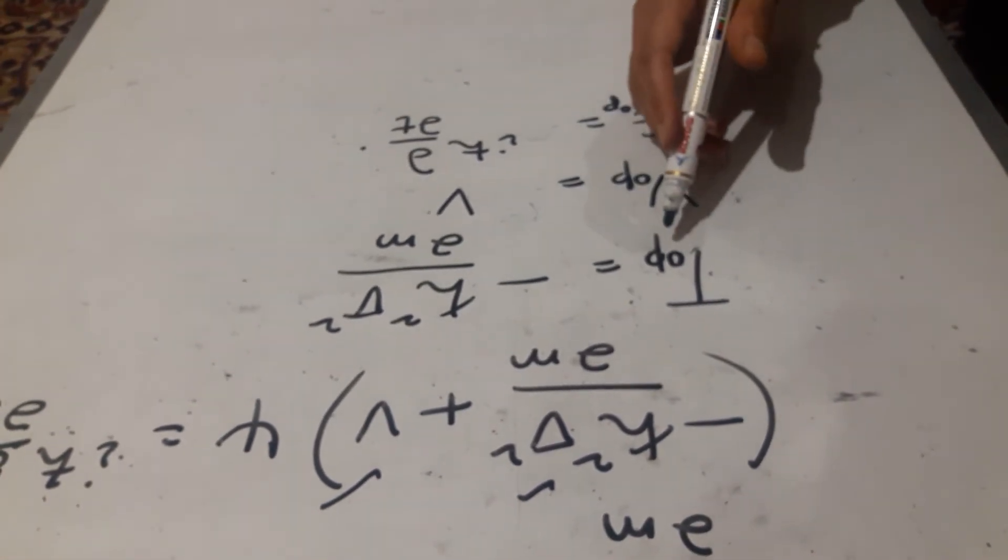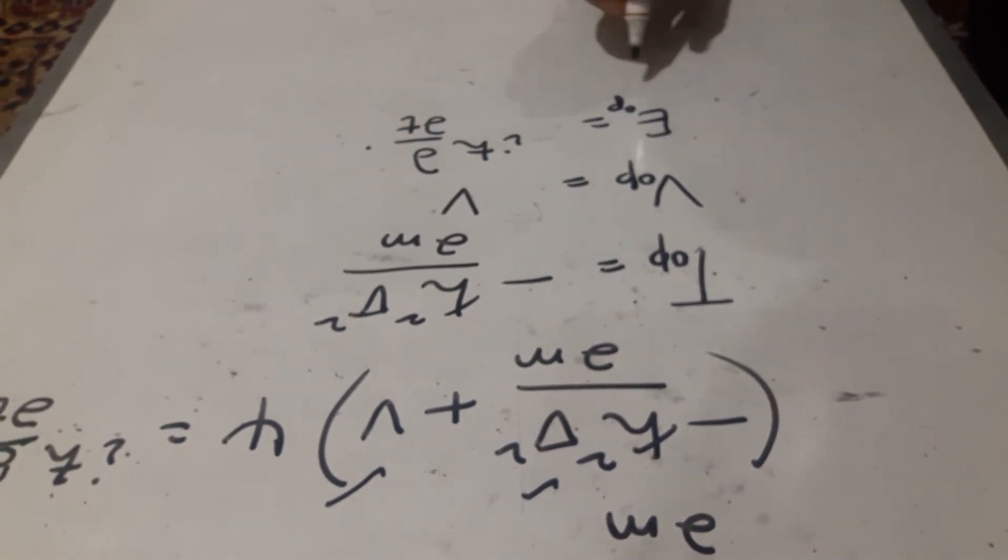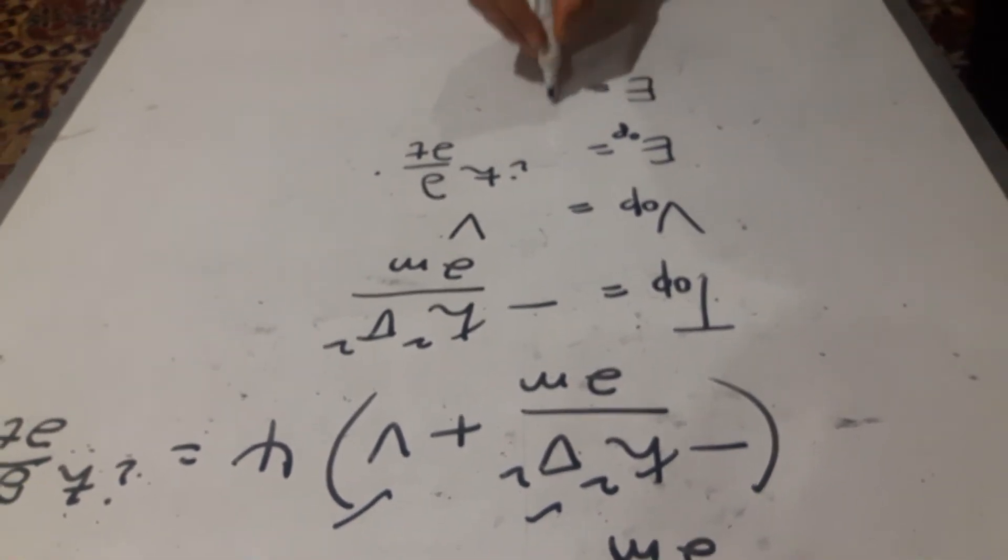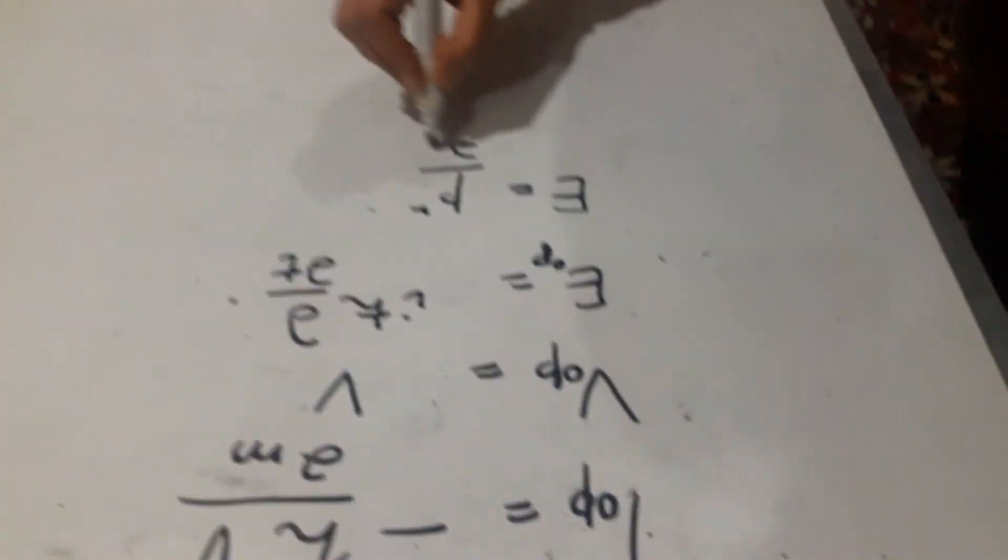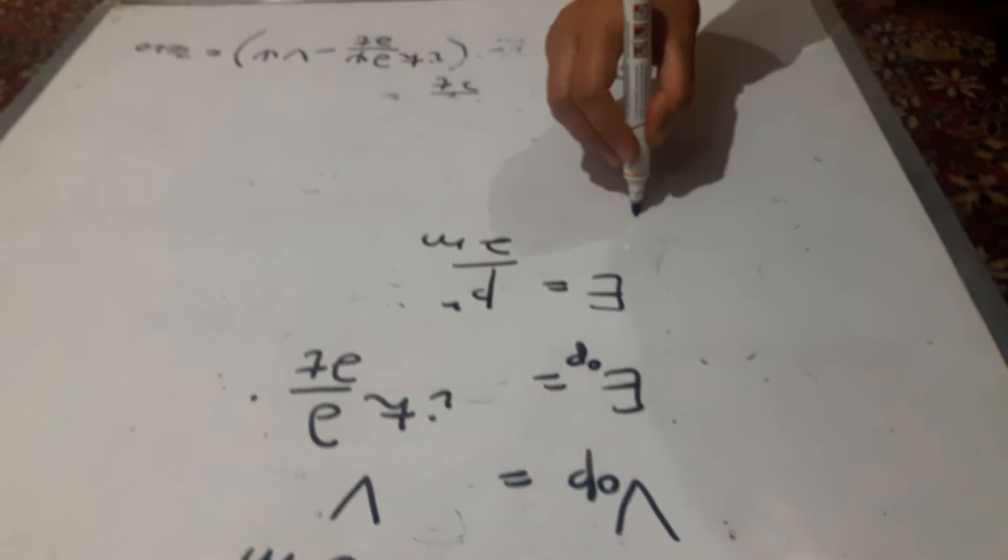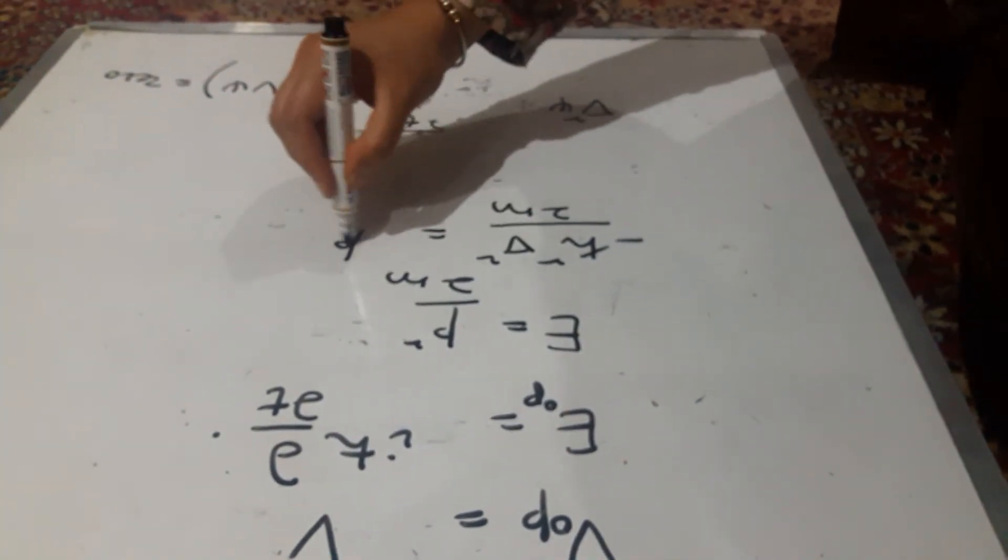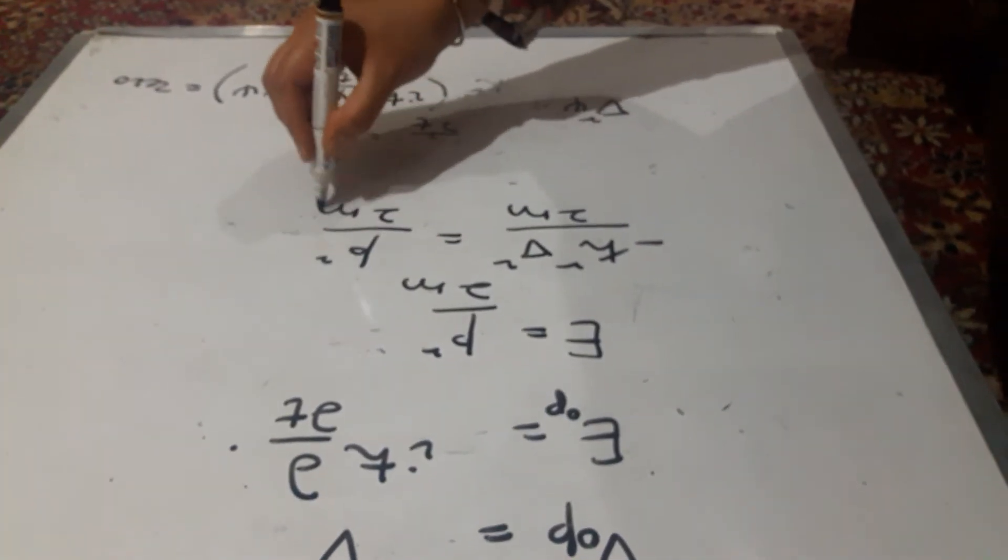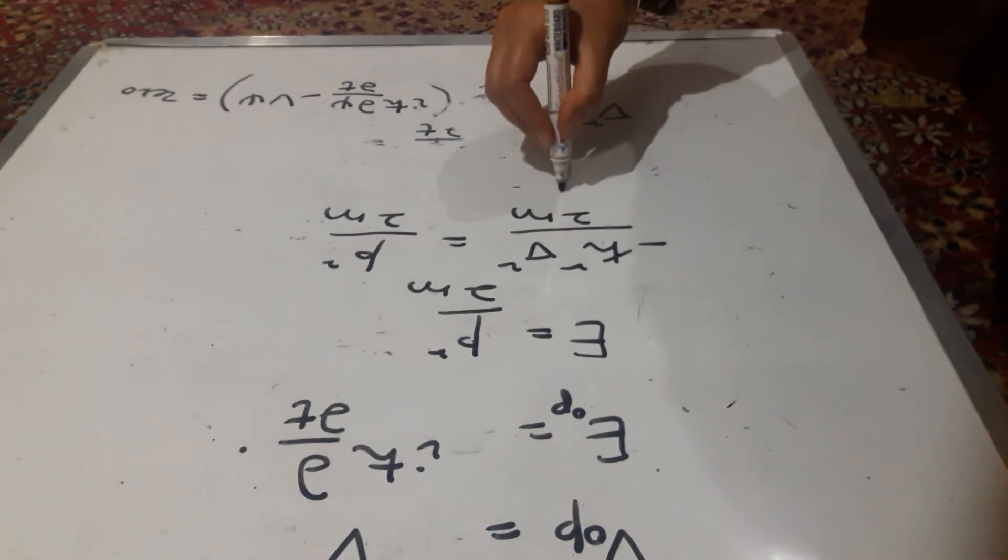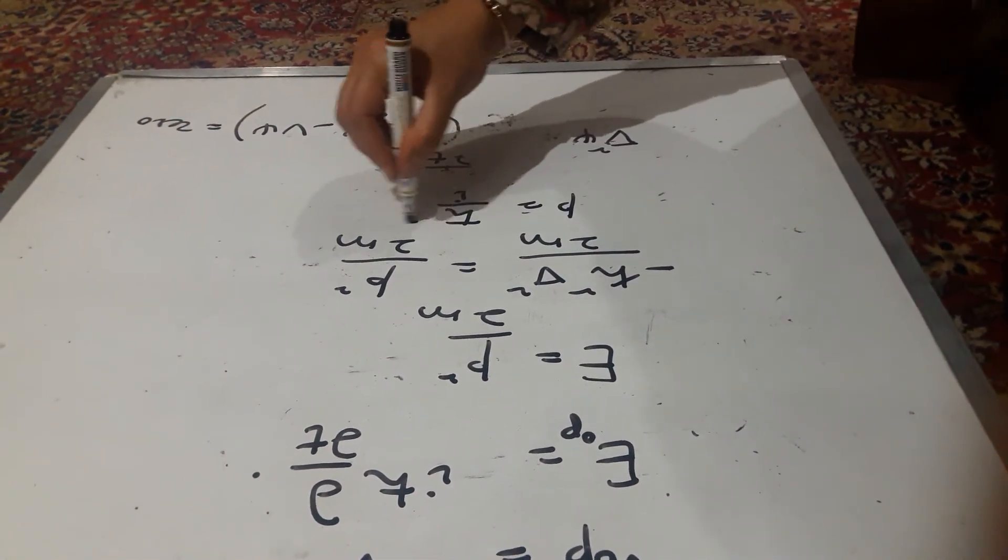Now if you want to find the momentum term, you can write it as, since e is equal to p square by 2m, you can write h cross square del square by 2m. That 2 minus times is equal to 2m, that 2m and 2m will go. So what is the operator for p? It is h cross by i del.